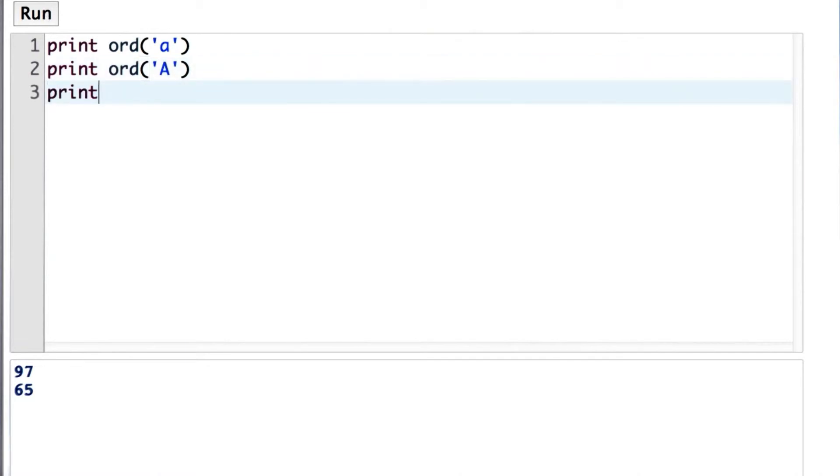We get 65. And if we print ord of 'B', we get 66. So the numbers are sort of sensible. B is higher than A.